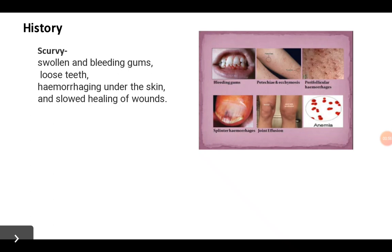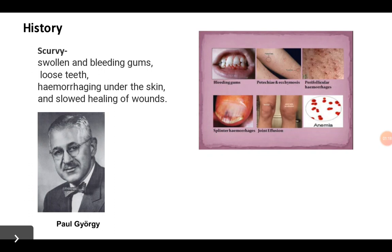Though scurvy was known since the 1600s, very few remedies were discovered. In the early 1800s, scientists confirmed that citrus fruits can reverse the symptoms of scurvy. In the 1930s, Paul György, well known for his discoveries in water-soluble vitamins, first crystallized vitamin C and established the correlation between vitamin C and scurvy.